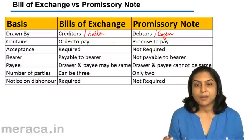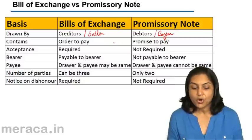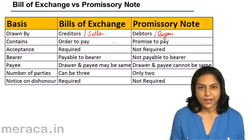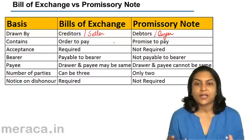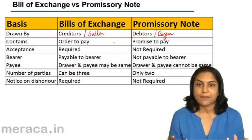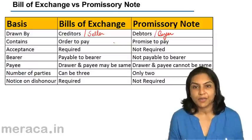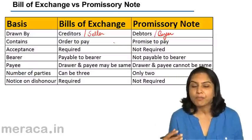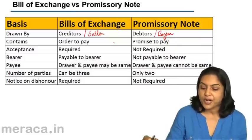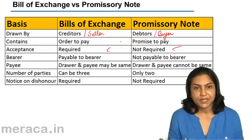Regarding acceptance: a bill of exchange becomes a valid bill of exchange only when it is accepted. Till such time that Y signs and accepts the bill of exchange, it is not a valid bill of exchange. But a promissory note is a promise to pay and therefore does not require any such acceptance.